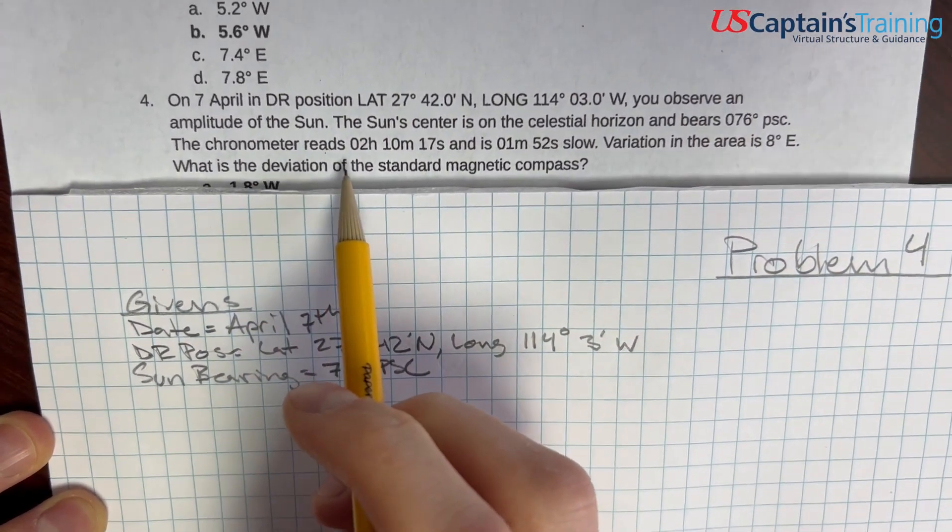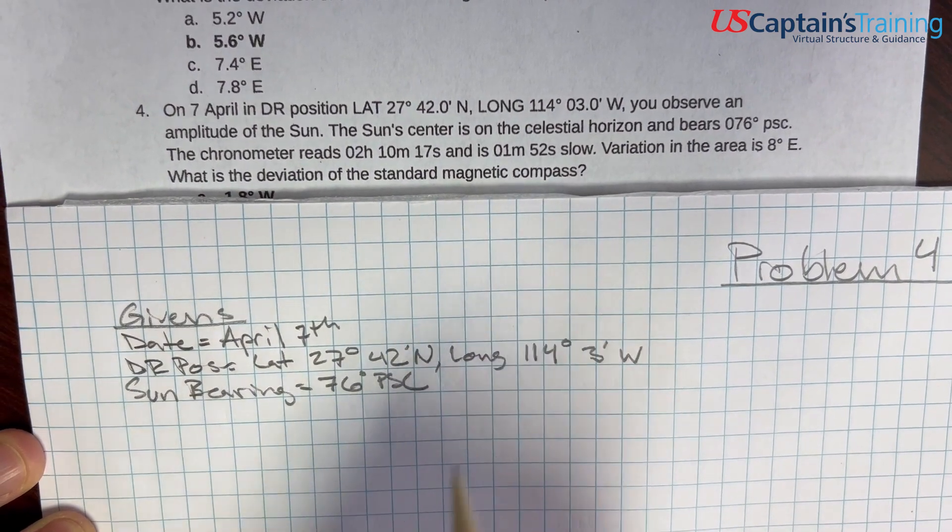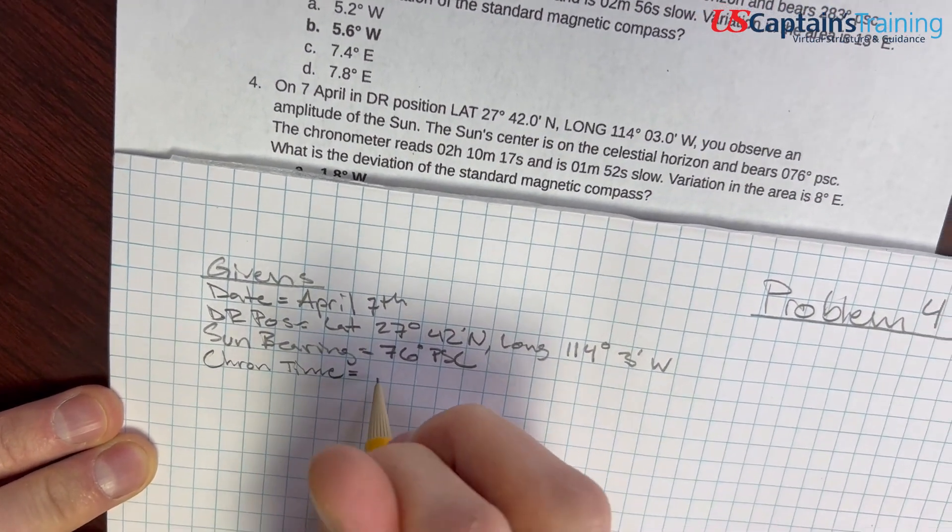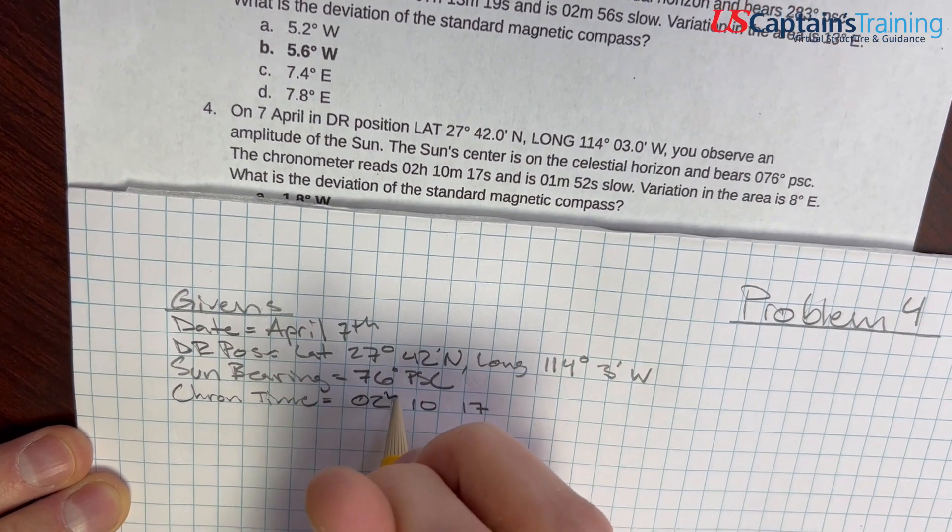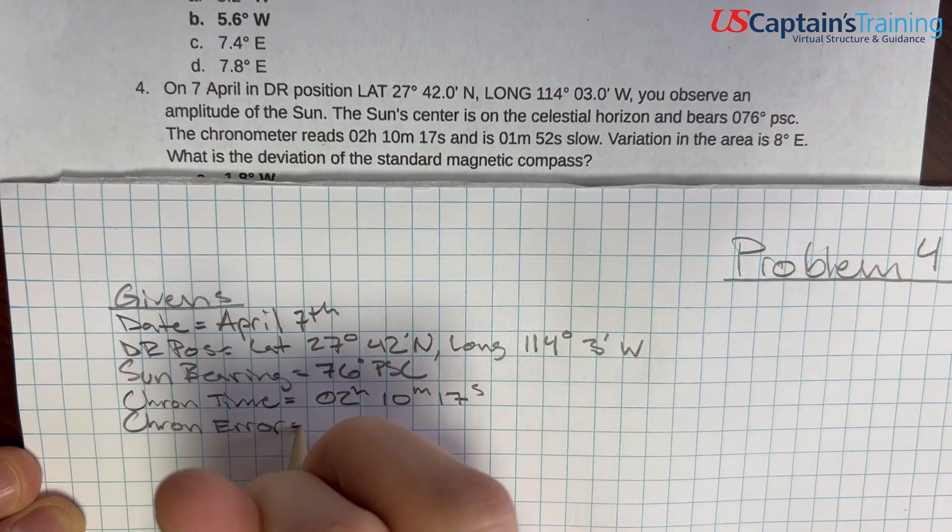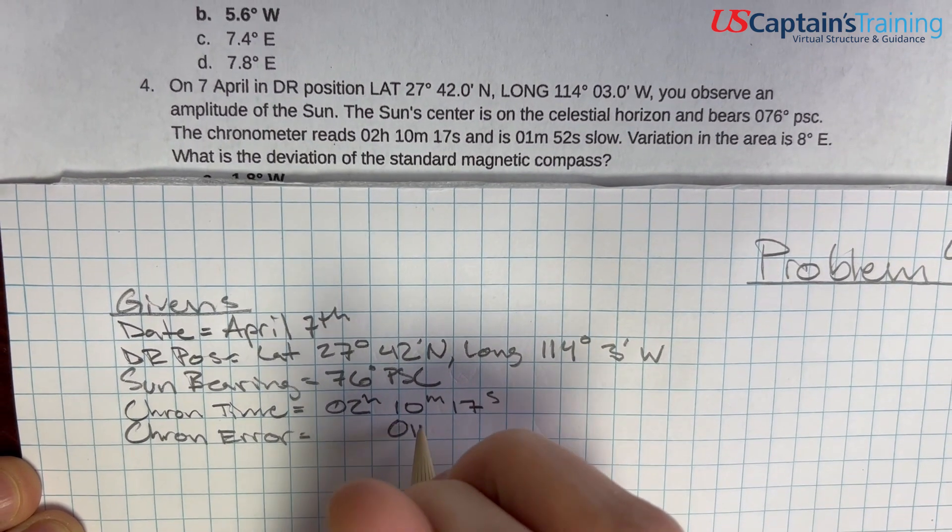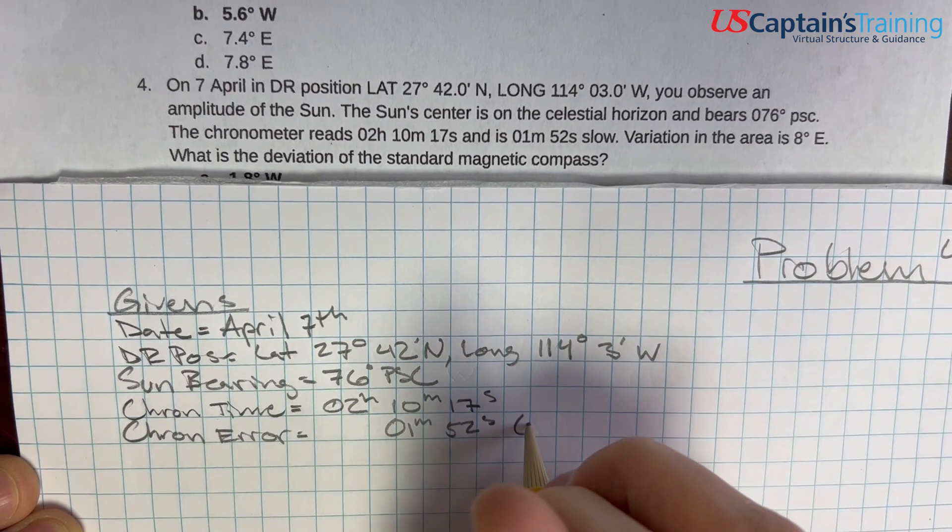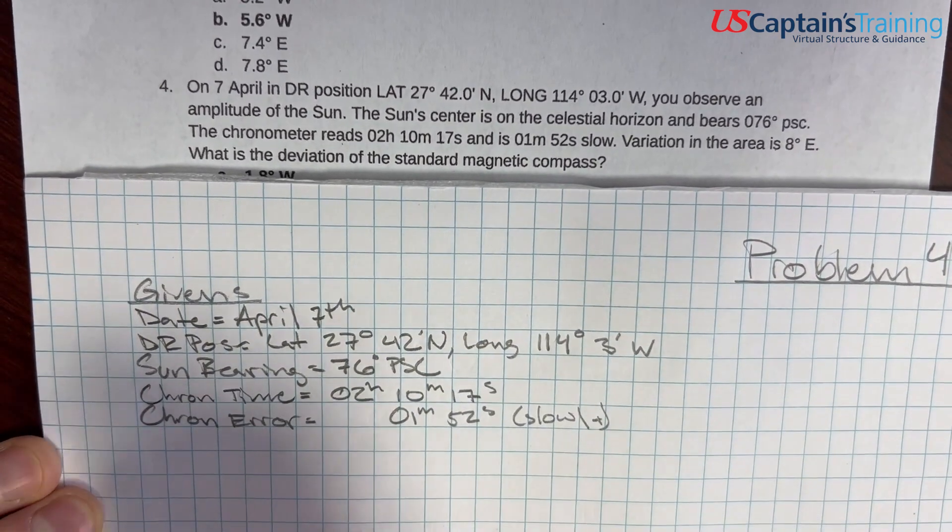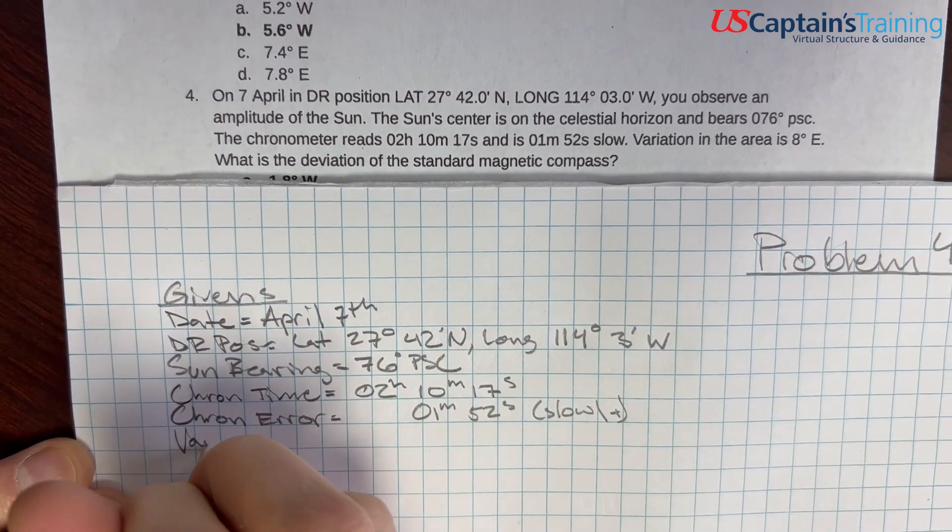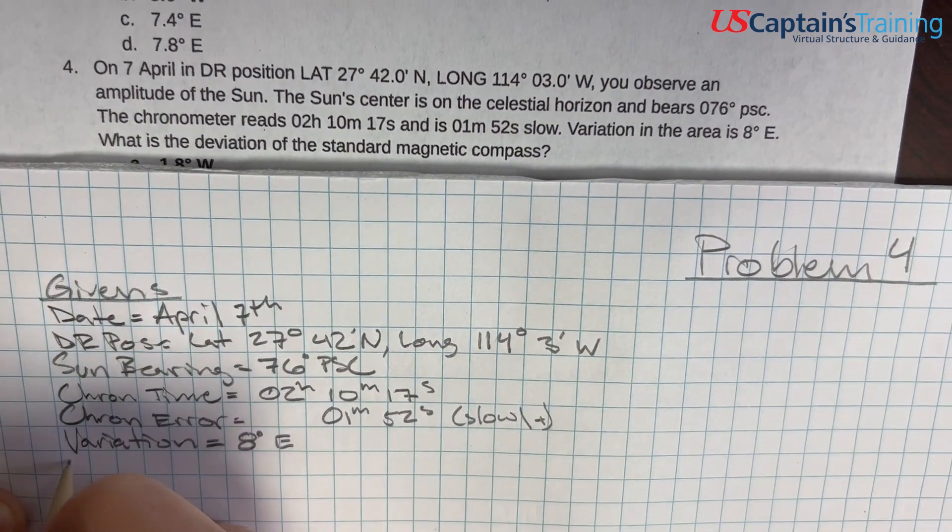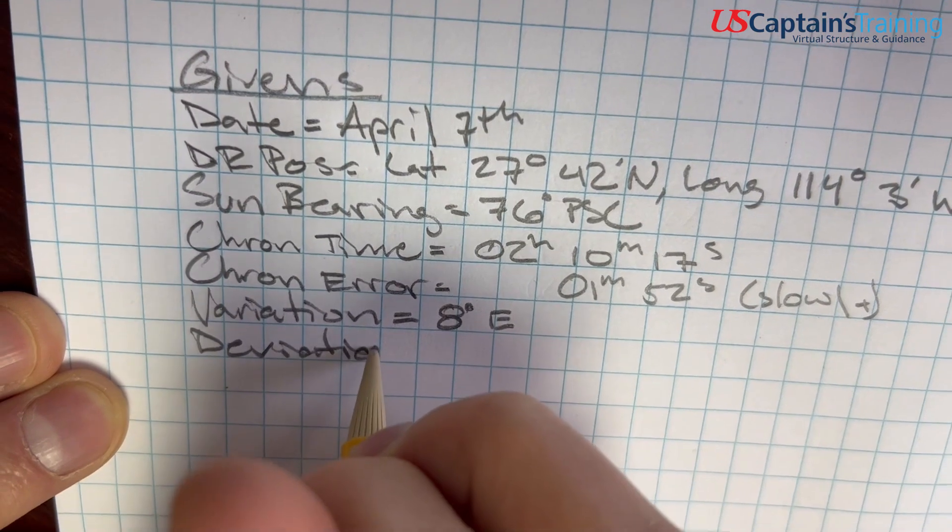The chronometer reads 2 hours 10 minutes 17 seconds and is 1 minute 52 seconds slow. So the chron time is 02:10:17 and the chron error is 1 minute 52 seconds slow, which means we add it. And lastly, variation is 8 degrees east. What is the deviation?